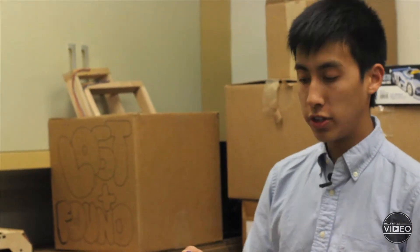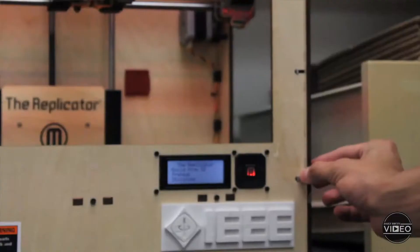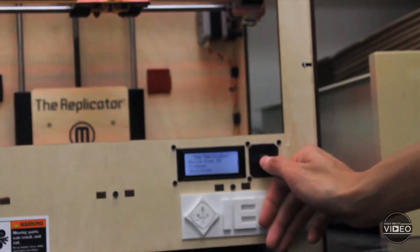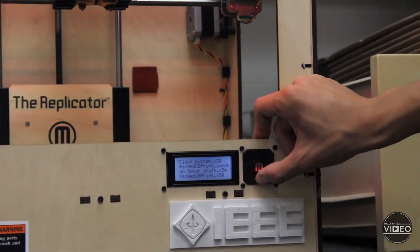And when you finish your design, you put it on the SD card here, stick it right into the side of the 3D printer, and all you have to do is select which file you named yours.